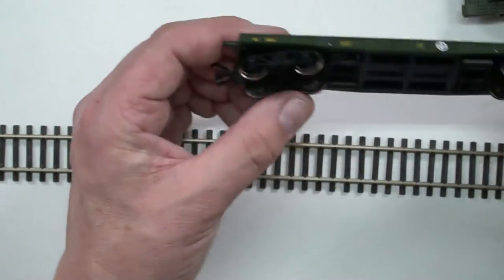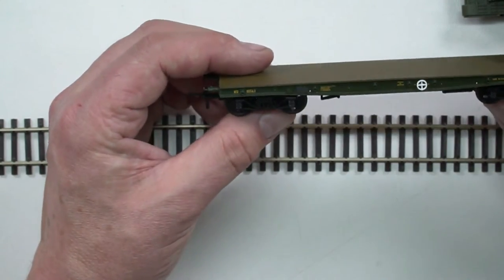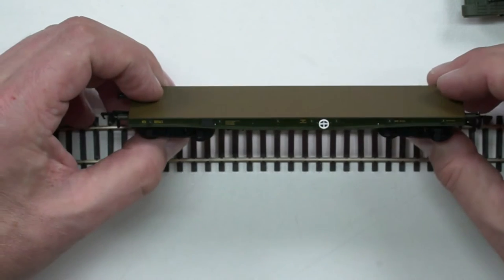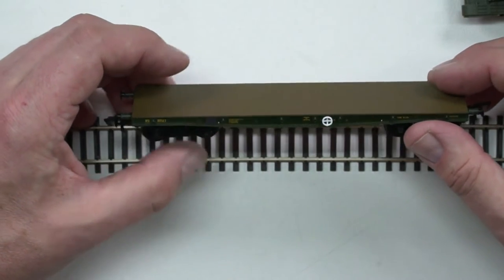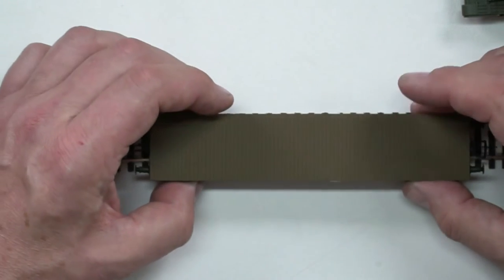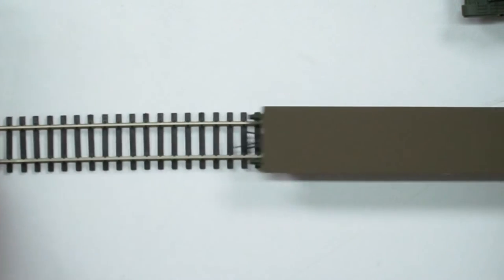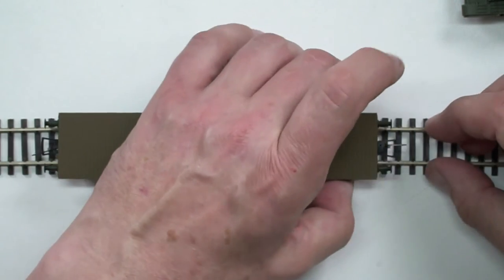Alright, so what you get here is a really nice flat wagon, free rolling, nice and heavy, nicely weighted. That's usually the problem with most flat wagons in any scale - they're always hard to keep on the track because they're so light they bounce off.